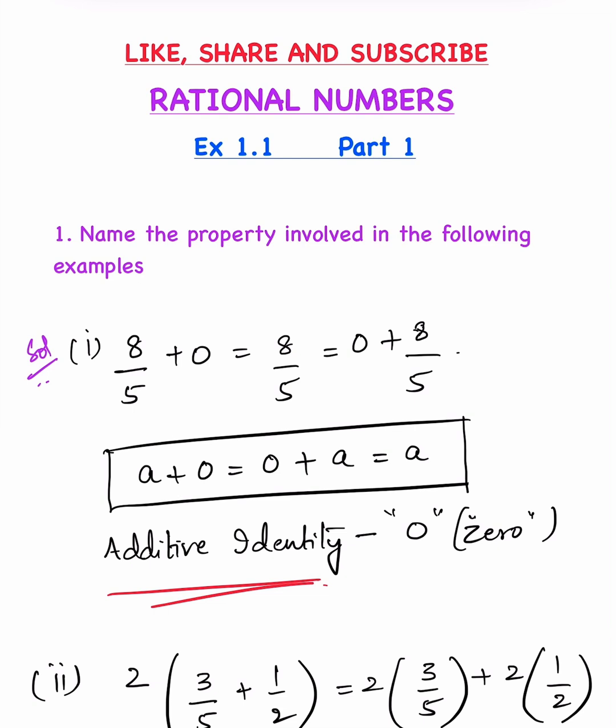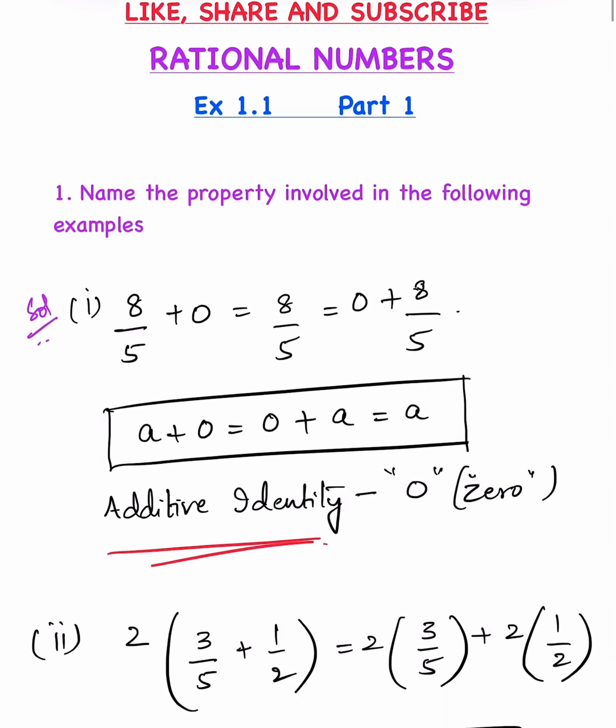Name the property involved in the following examples. First bit: 8/5 + 0 = 8/5 = 0 + 8/5. This is in the form of a + 0 = 0 + a = a. This is the additive identity property, because if 0 is added to any number, the answer remains the same number. So, 0 is called the additive identity of rational numbers.